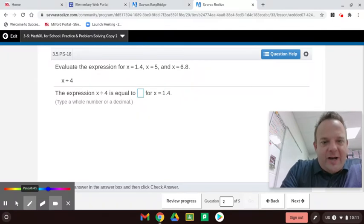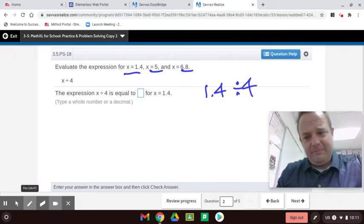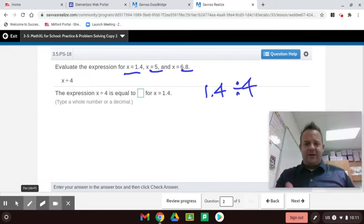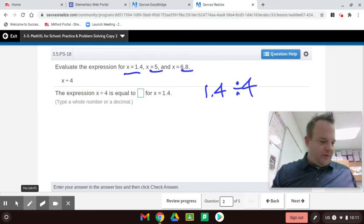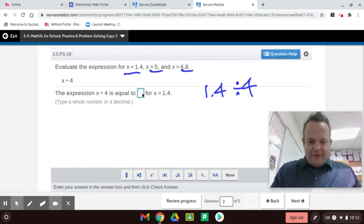x divided by 4. Now, we're going to test it out for each one of these, guys. You can see it's a multi-step problem. There will be more of these. So the first one is 1.4 divided by 4. You are allowed to use a calculator when doing this. You don't have to, but it is allowed.